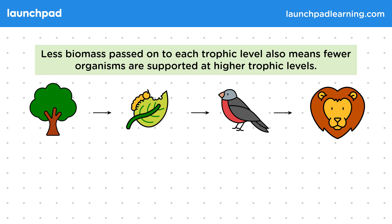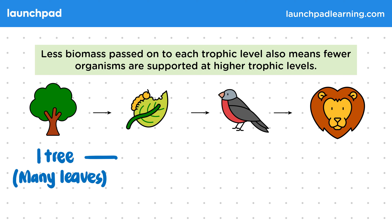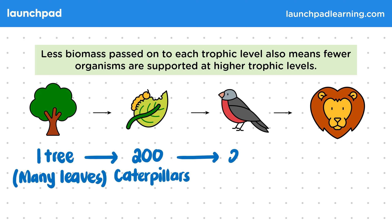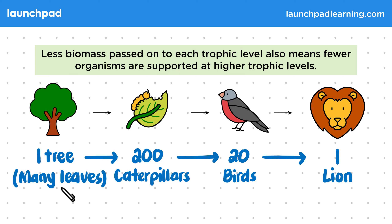At the bottom of the chain in this example, we have one tree with many leaves. These leaves are enough to sustain 200 caterpillars. These caterpillars are enough to sustain 20 birds. However, these 20 birds are only enough to support one lion. This example clearly shows that the higher up the food chain you go, the fewer organisms are supported.